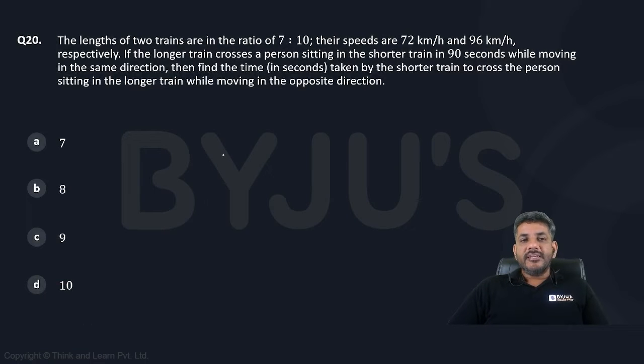This question says the lengths of two trains are in the ratio of 7 is to 10. Their speeds are 72 and 96 respectively. So let us say train 1 and train 2. Lengths are in the ratio of 7 and 10. Let us say 7L and 10L and the speeds are 72 and 96.